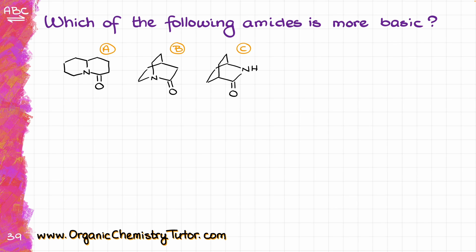First of all, let's talk about the amide functional group and what it is to begin with. An amide is a type of functional group — it is a carboxylic acid derivative — where we have a carbonyl which is directly attached to a nitrogen, which in turn can be connected to either two hydrogens, two carbons, or any combination thereof.